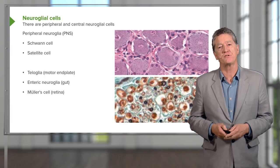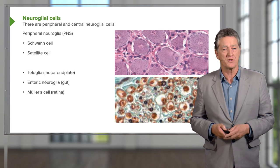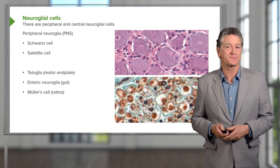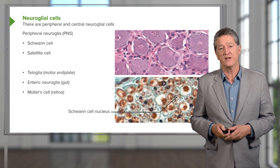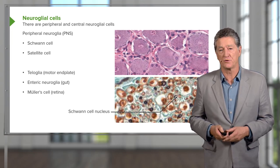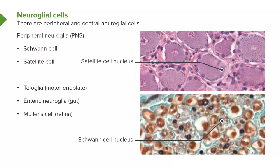There's the Schwann cell nucleus shown in this section, responsible for myelination in peripheral nerves. And there's the satellite nucleus wrapping around the big ganglion cell you see in the top image.